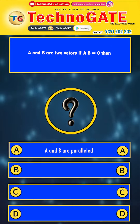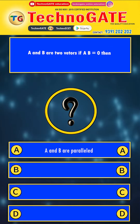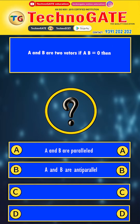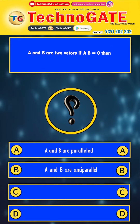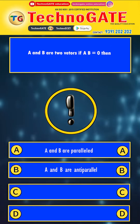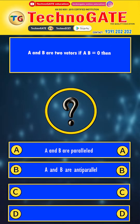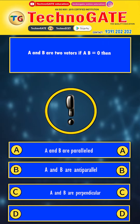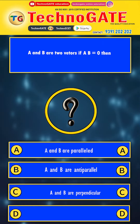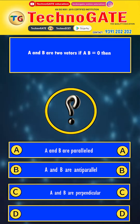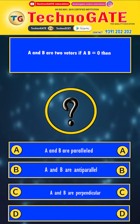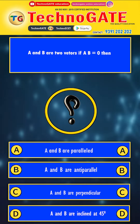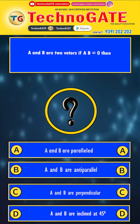Option A: A⃗ and B⃗ are parallel. Option B: A⃗ and B⃗ are anti-parallel. Option C: A⃗ and B⃗ are perpendicular. Option D: A⃗ and B⃗ are inclined at 45 degrees.